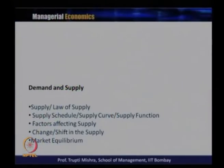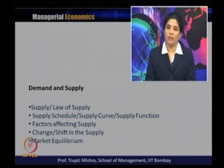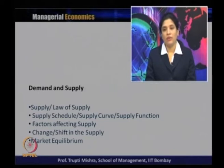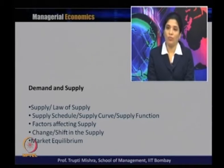Supply and the law of supply were also discussed — other things being constant, there is a positive relationship between price and quantity supplied. The supply schedule is the numerical representation, the supply curve is the graphical representation, and the supply function is the mathematical relationship between supply and price. Factors affecting supply determine changes in supply. A price change causes movement along the supply curve, while a change in a non-price determinant shifts the supply curve — right for an increase and left for a decrease.